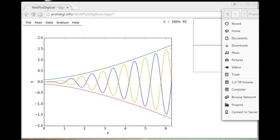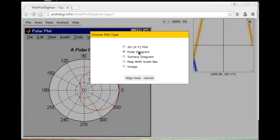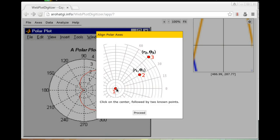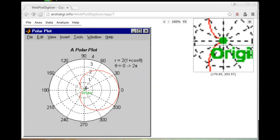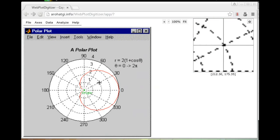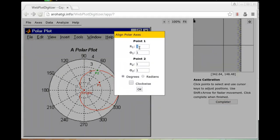WebPlotDigitizer can also be used to extract data from polar diagrams. In this example, we have a simple polar diagram and we click polar diagram as the axis type. Now we have to specify three points. One at the center and two at some known locations. Click proceed. So this is where the center is. I'll be picking two points at two and 30 degrees and three and 60 degrees. Click complete. Two, thirty. Three, sixty.